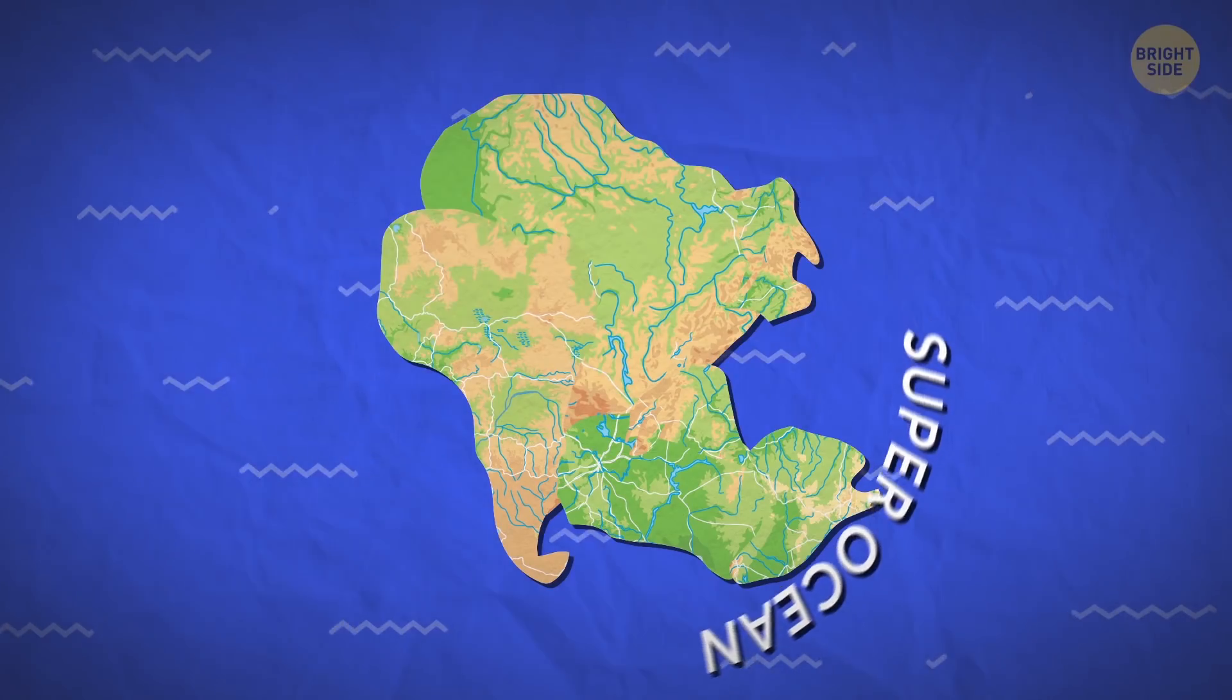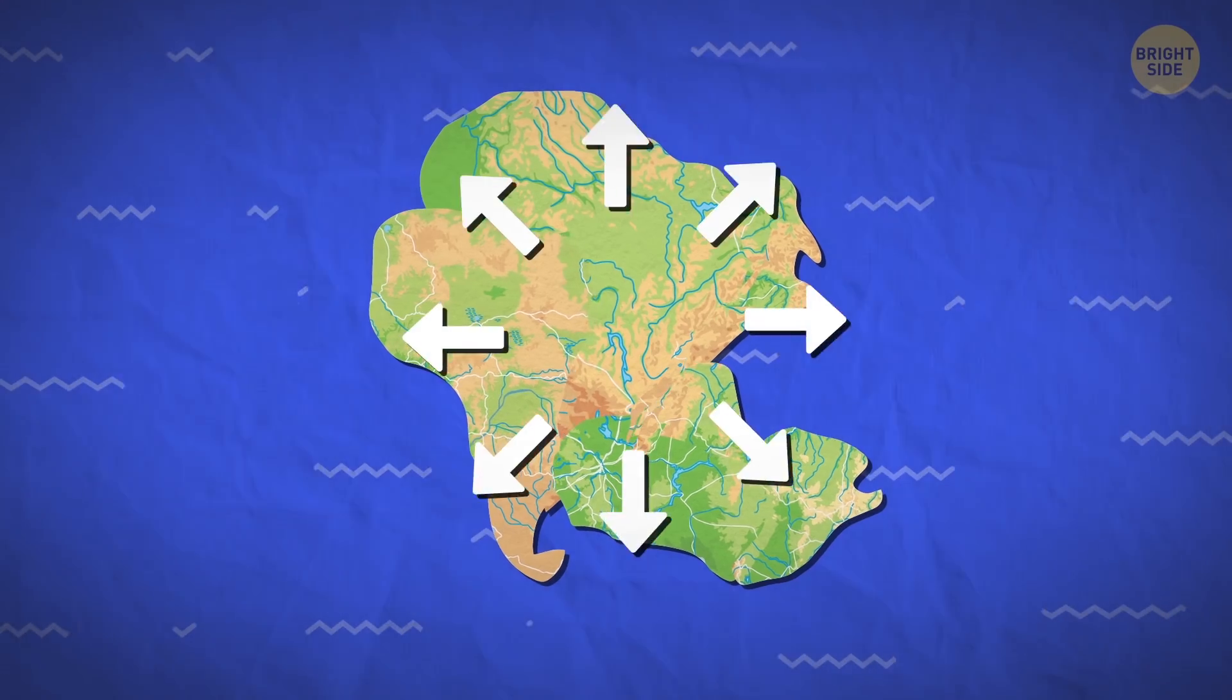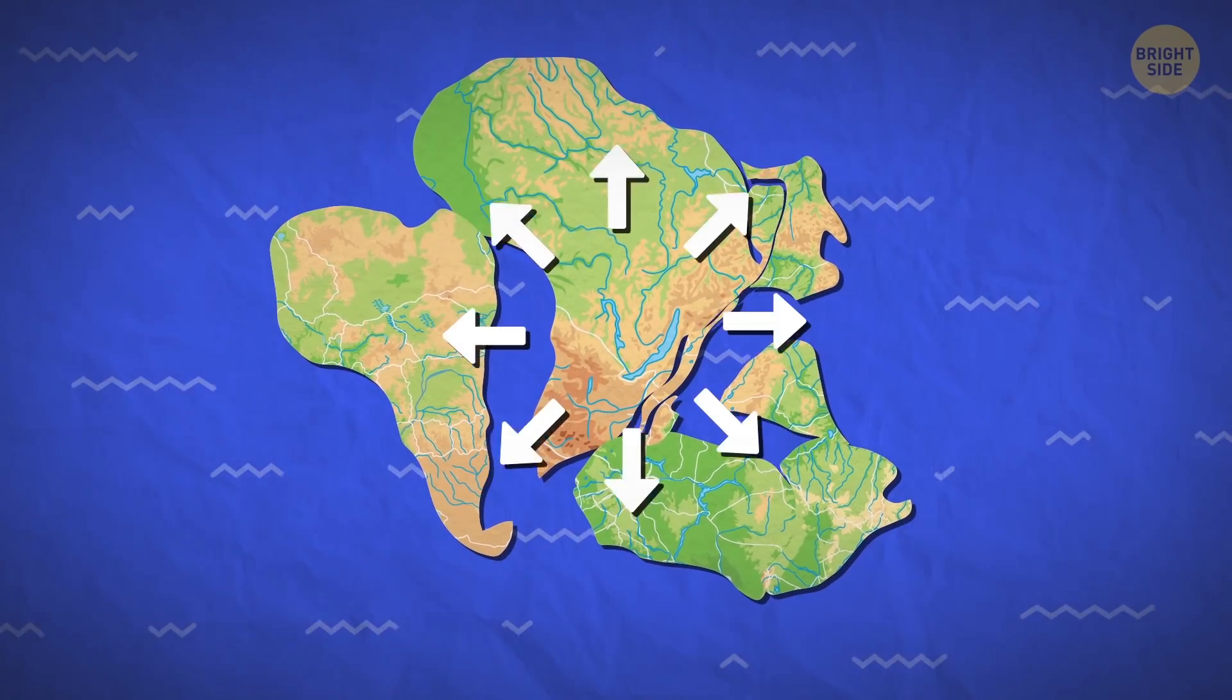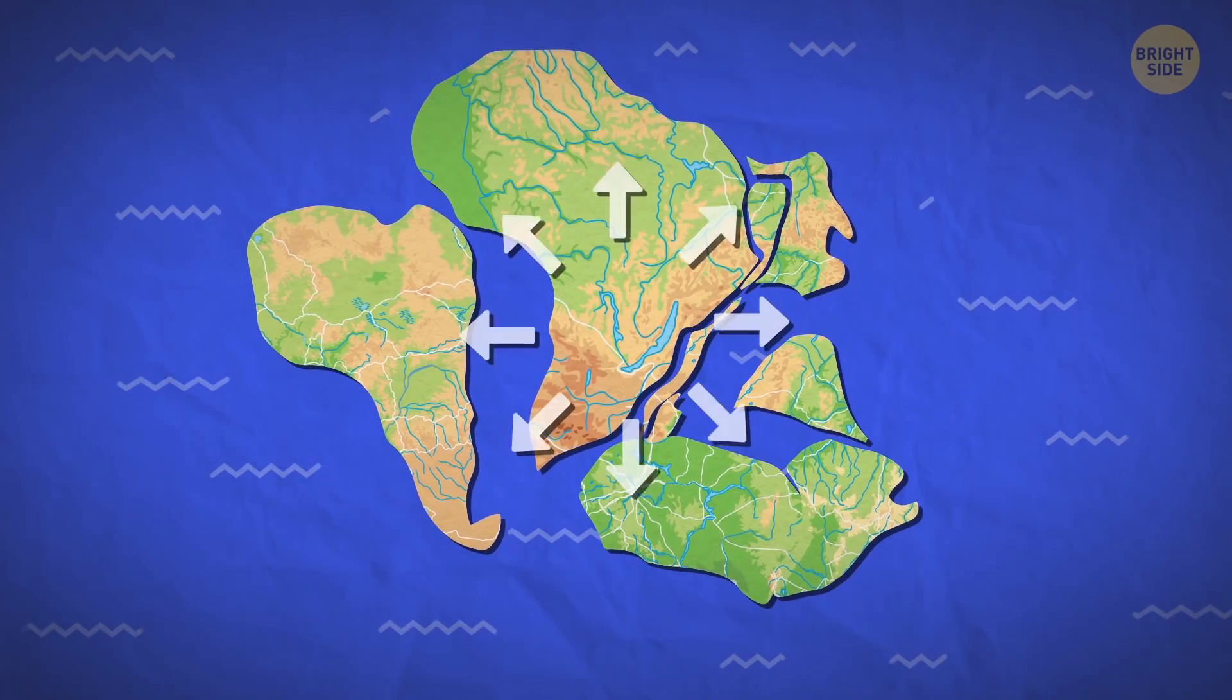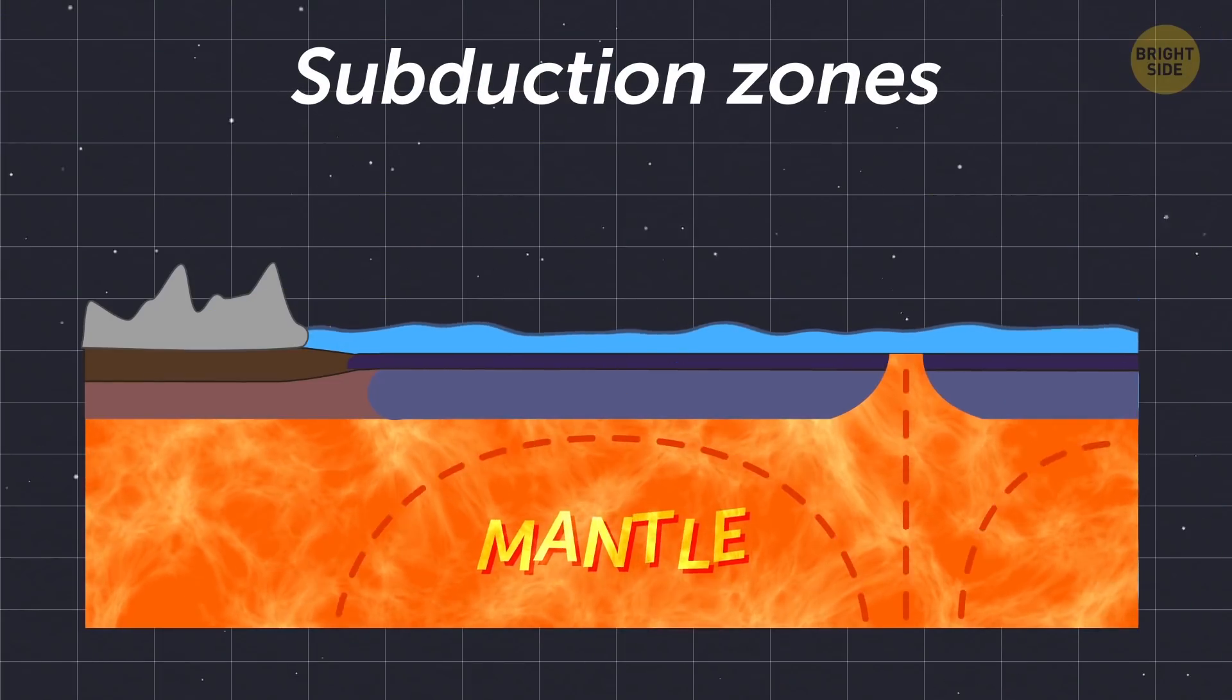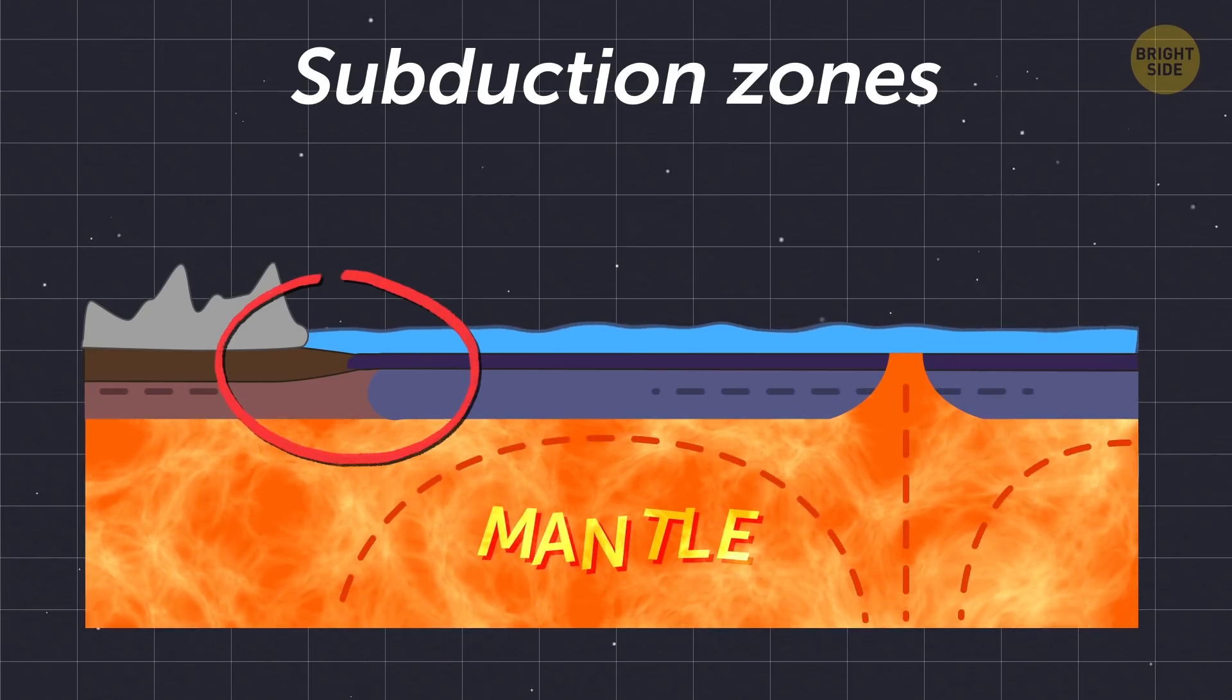Now, imagine a giant landmass being surrounded by a superocean. When the continent starts to separate and small rifts form, water begins to slowly flow through them until a smaller inner ocean is formed. That's when subduction zones come into play.